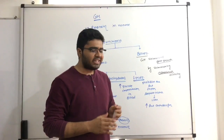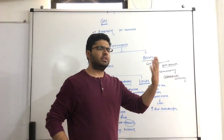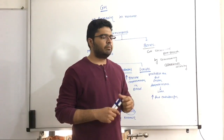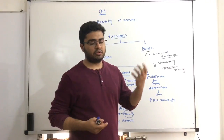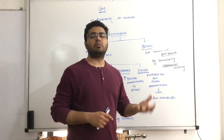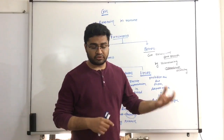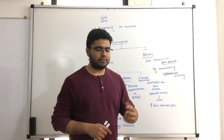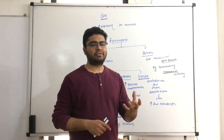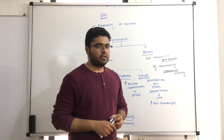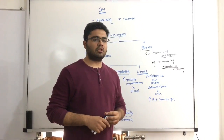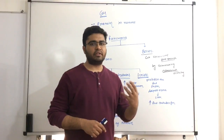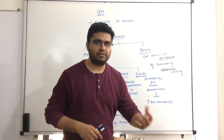In gigantism or acromegaly, if growth hormone is excessive, a person's height can reach seven to eight feet. If growth hormone is not secreted from childhood, the person's height is reduced — this is known as dwarfism, where height is only about three to four feet. Excessive secretion of growth hormone also causes hyperglycemia, a condition known as pituitary diabetes.